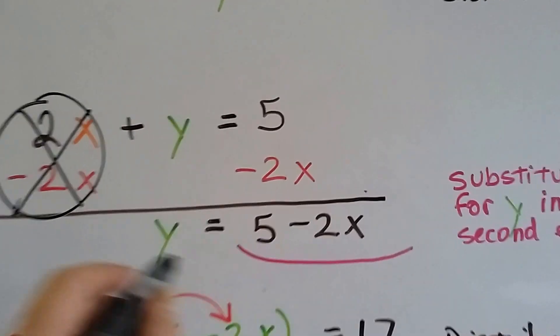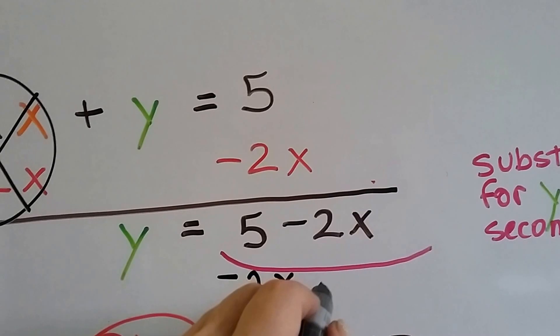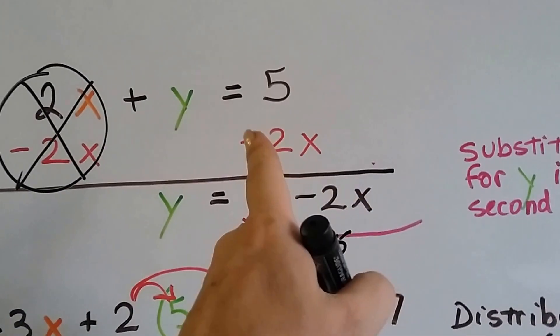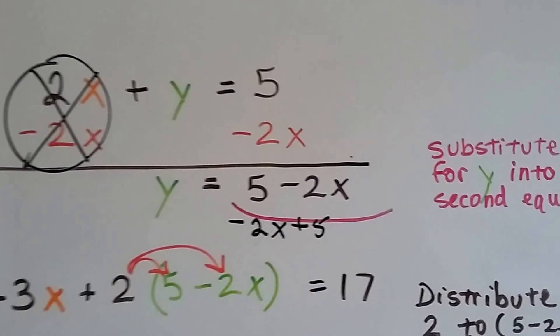We could have also written it as y equals negative 2x plus 5. I could have written it either way, but I decided to go this way because most people are going to add the negative 2x to the end, so I'm going to show you what happens.